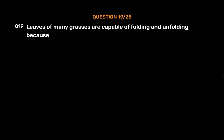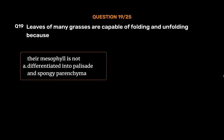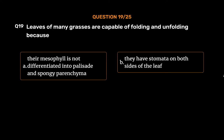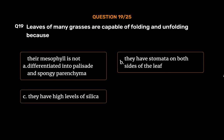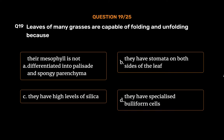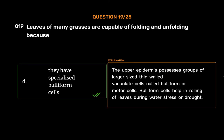Question No. 20: Leaves of many grasses are capable of folding and unfolding because — Option A: Their mesophyll is not differentiated into palisade and spongy parenchyma, Option B: They have stomata on both sides of the leaf, Option C: They have high levels of silica, Option D: They have specialized buliform cells. The correct answer is Option D. The upper epidermis possesses groups of larger-sized thin-walled vacuolate cells called buliform or motor cells. Buliform cells help in rolling of leaves during water stress or drought.